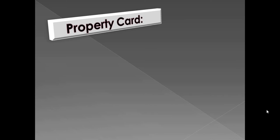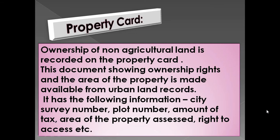On page 38, figure 6.2, a sample of Satbara is given. On page 39, figure 6.3, a property card sample is given. Ownership of non-agricultural land is recorded on the property card. This document showing ownership rights and the area of the property is made available from urban land records. It contains the following information: city survey number, plot number, amount of tax, area of the property assessed, right to access, etc.